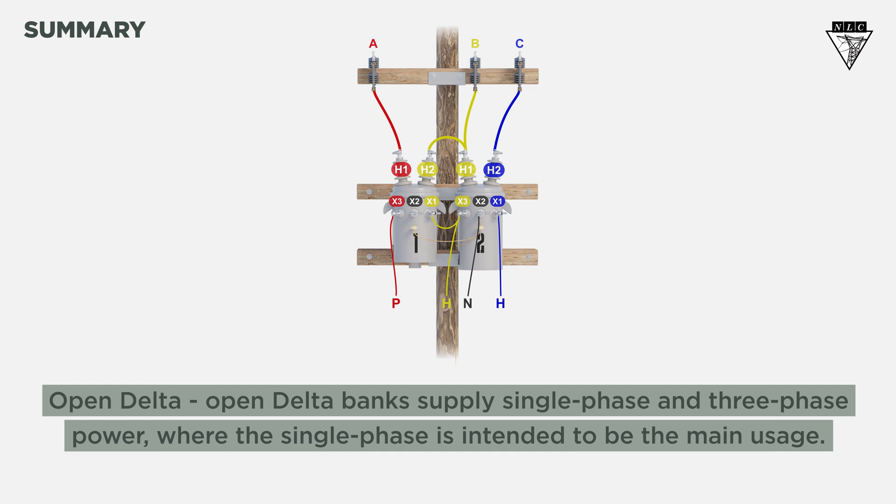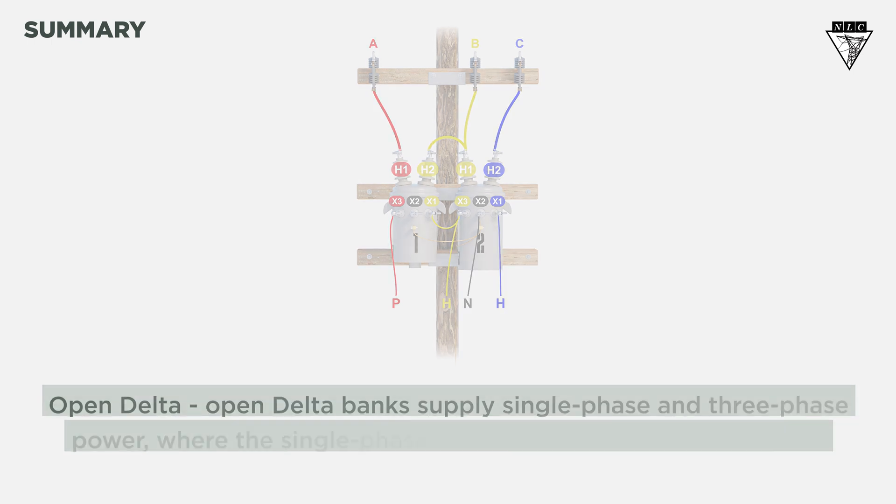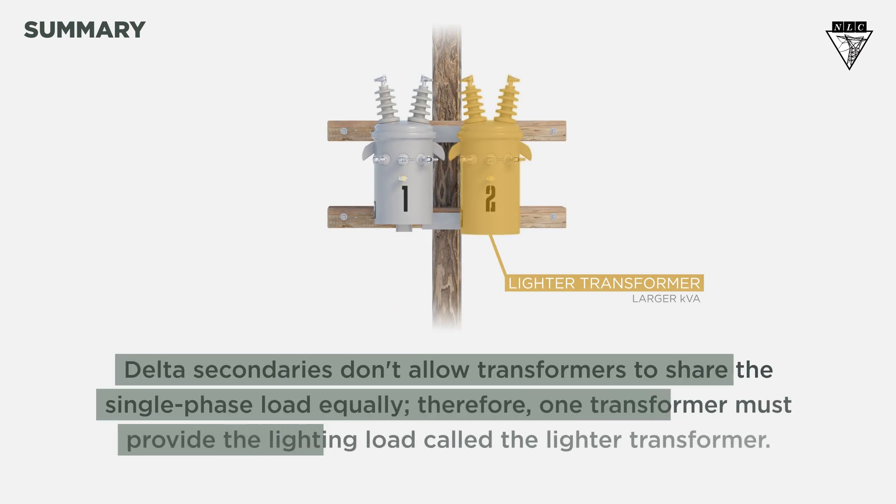So, what did we learn? Open-delta open-delta banks supply single-phase and three-phase power, where the single-phase is intended to be the main usage. Delta secondaries don't allow transformers to share the single-phase load equally. Therefore, one transformer must provide the lighting load, called the lighter transformer.